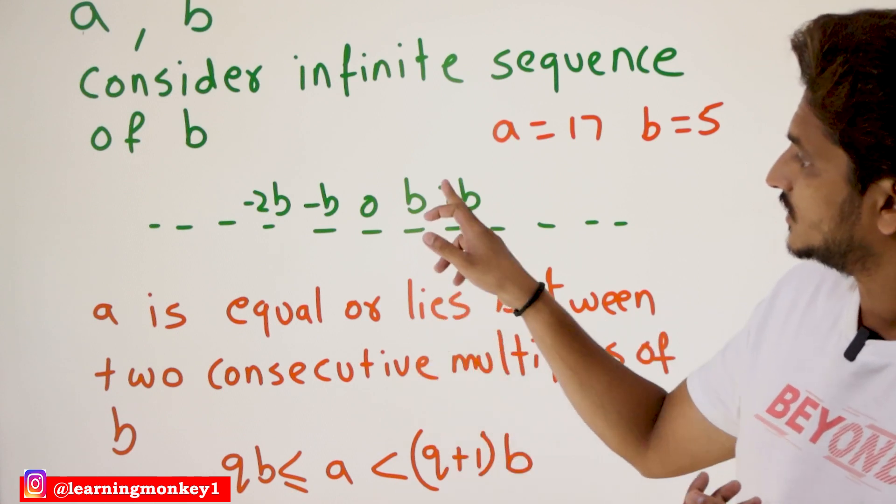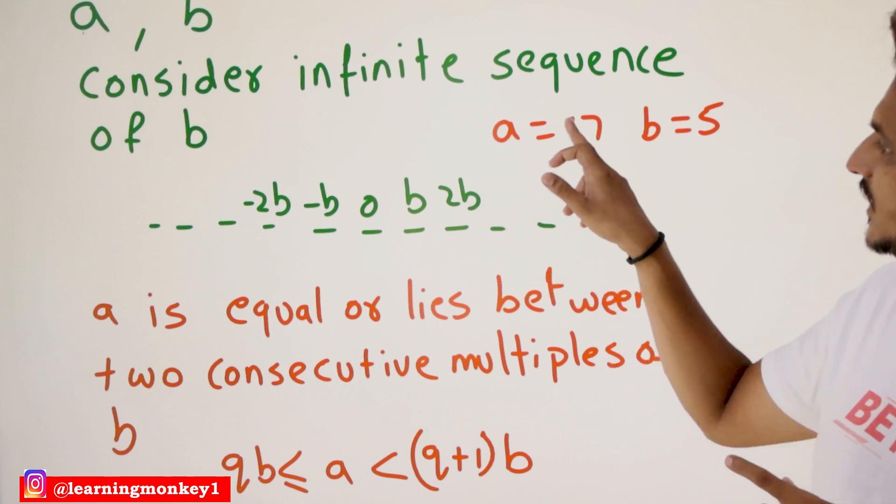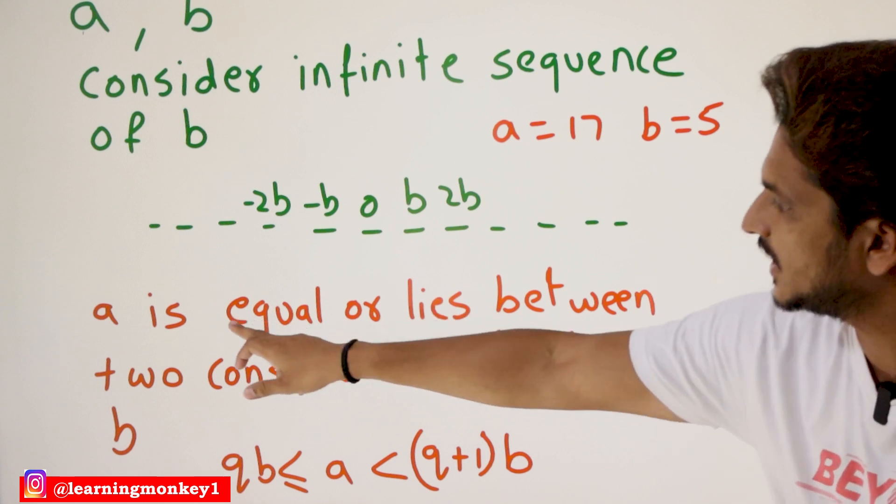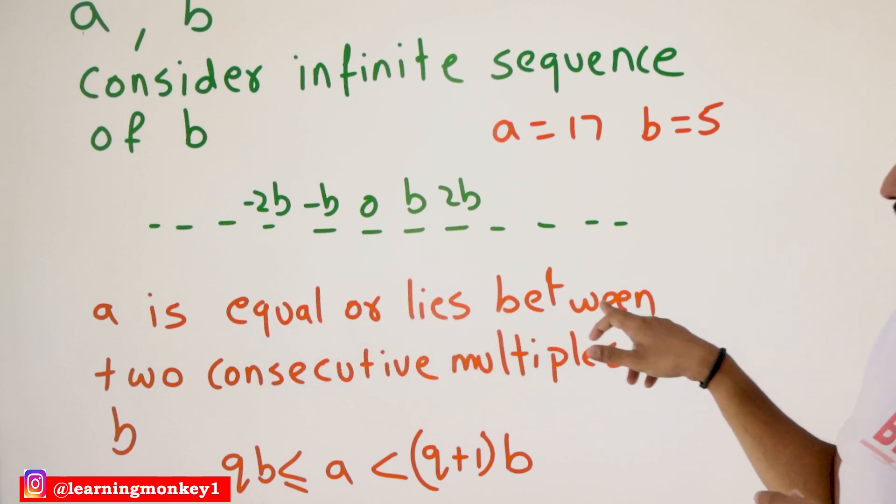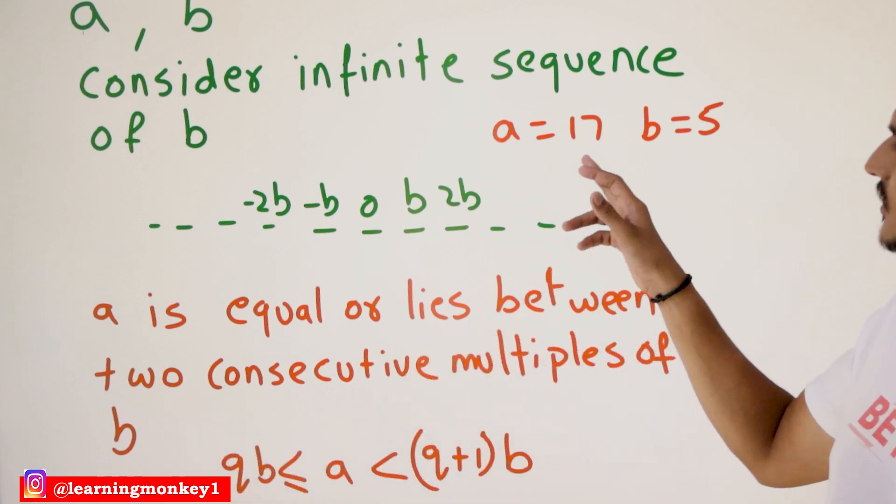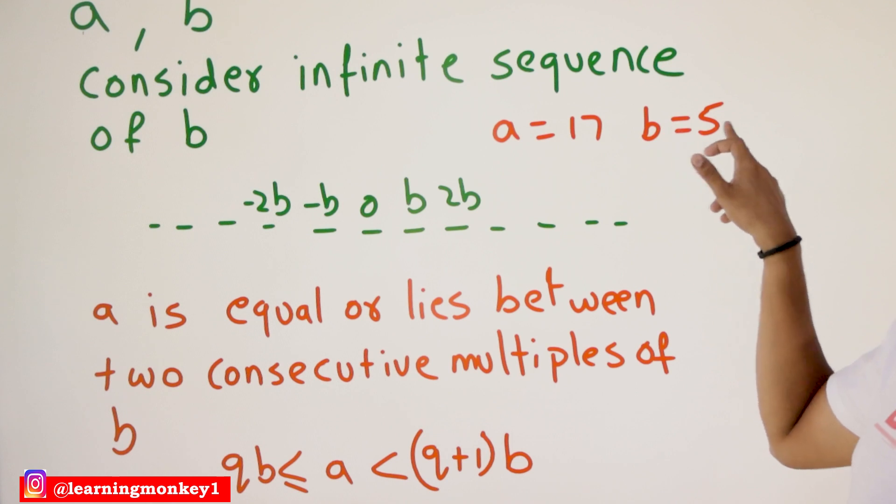Definitely, B, 2B, 3B, 4B, definitely A is going to lie between some consecutive. A is equal or lies between two consecutive multiples of B. What's the meaning of this? Assume that A is equal to 17, B is equal to 5.